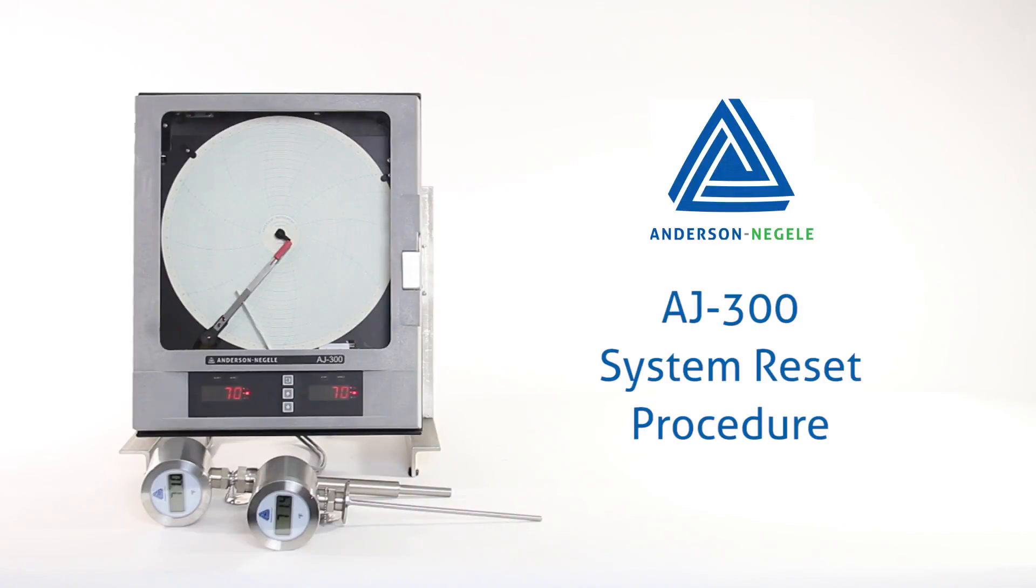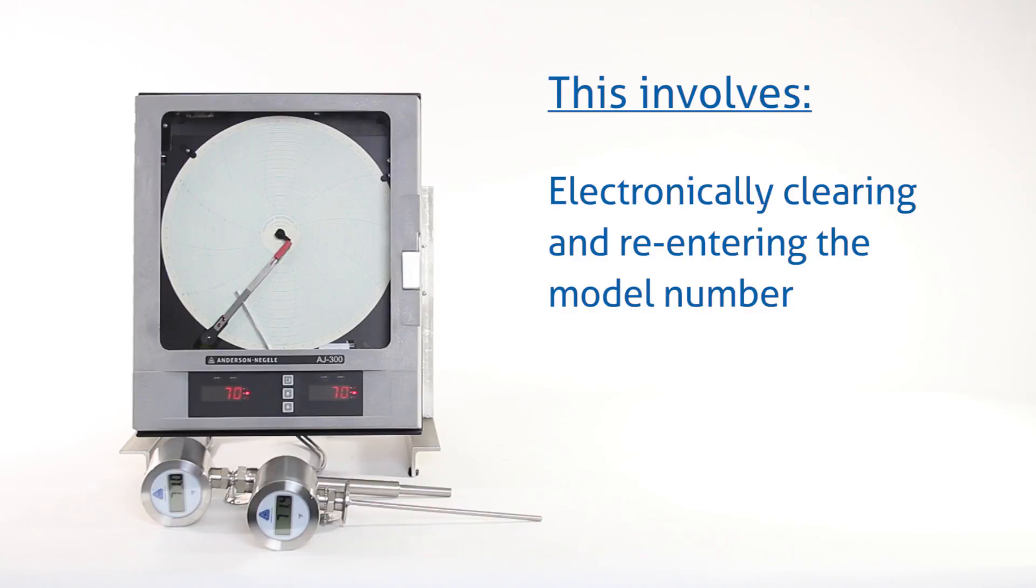If you're working on a recorder that may have been programmed or calibrated incorrectly, you can reset the unit for a fresh start by following the system reset procedure. The system reset is performed by electronically clearing out and re-entering the model number.